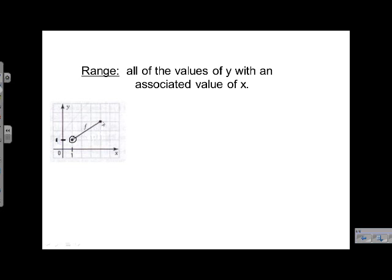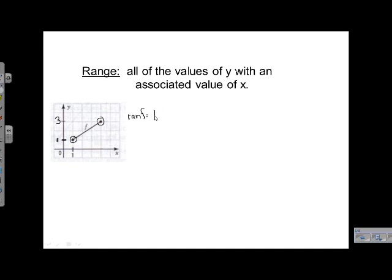What's our highest value? It peaks right here, and at that point y is 3. Same idea as domain when we write it, except this time we use RAN for range instead of DOM. Equals our lowest value of y, which is 1, and our highest value of y, which is 3, with closed brackets around them.